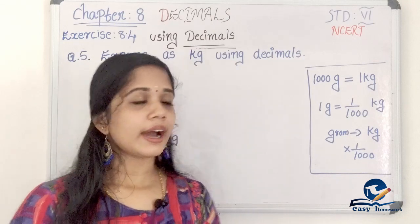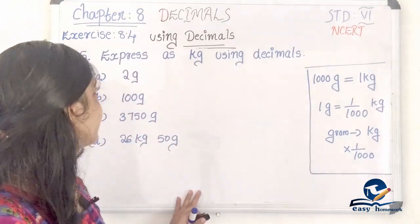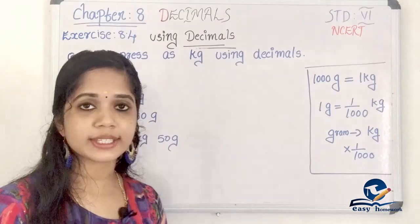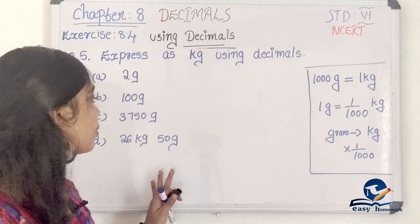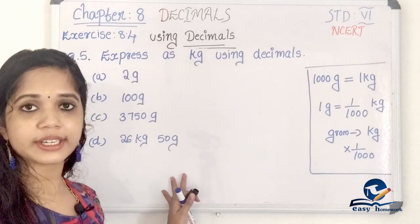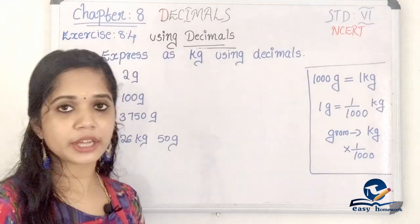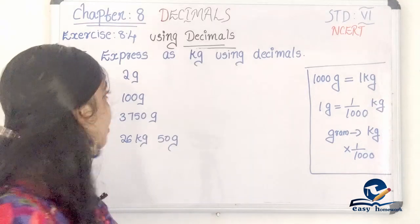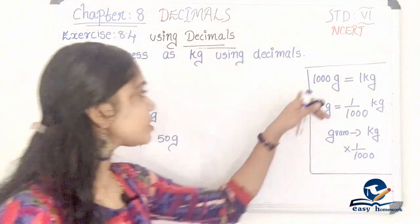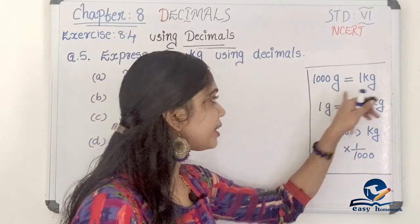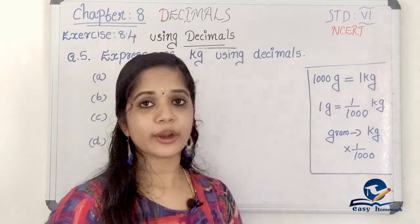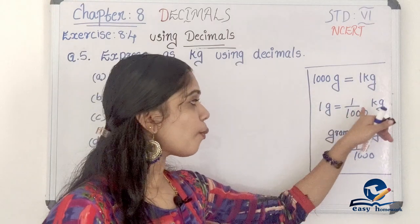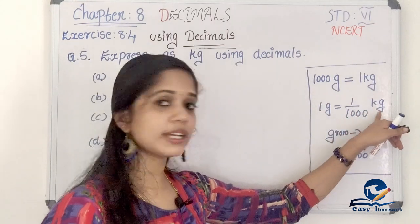Question number 5: Express as kg using decimals. 1000 grams is 1 kg, so 1 gram equals 1 by 1000 kg.